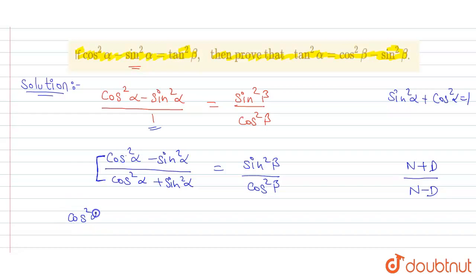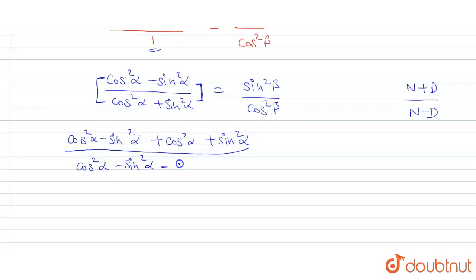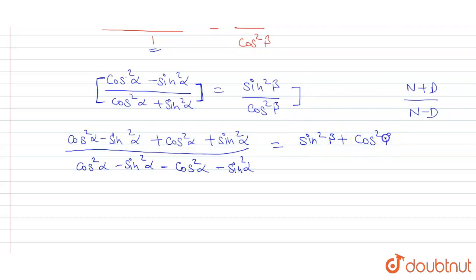We will add both terms in the numerator: cos squared alpha minus sin squared alpha plus cos squared alpha plus sin squared alpha. On the right side, we apply componendo dividendo as well — adding to get sin squared beta plus cos squared beta in the numerator, and subtracting to get sin squared beta minus cos squared beta in the denominator.